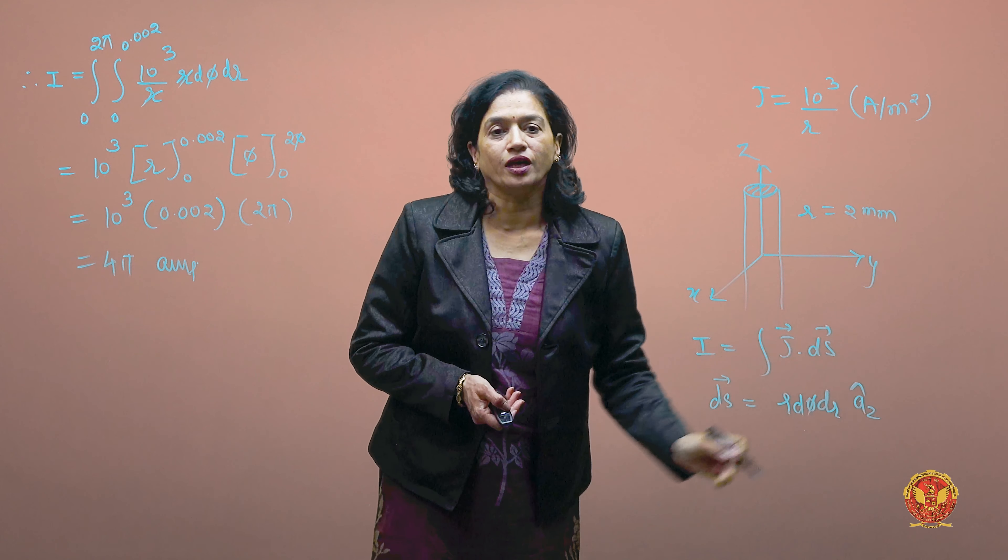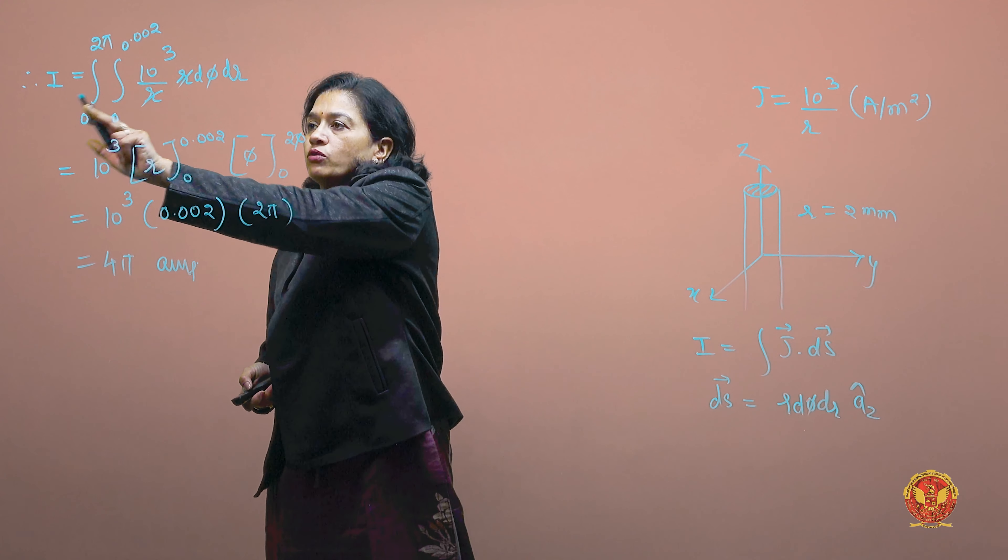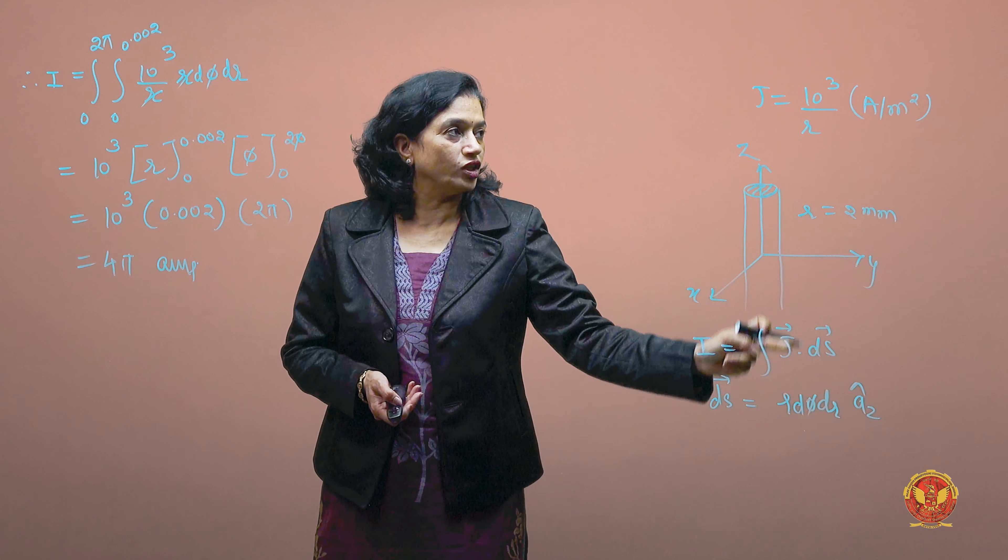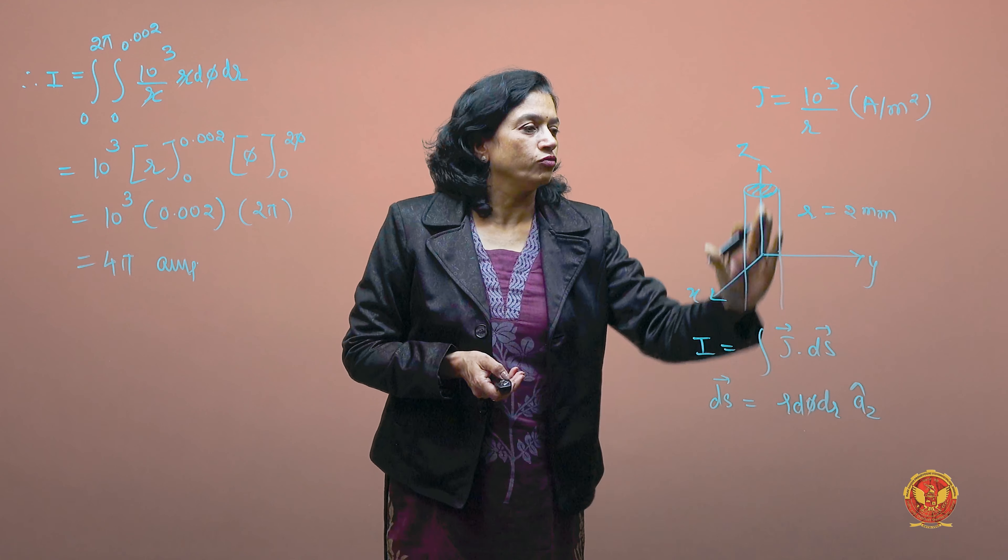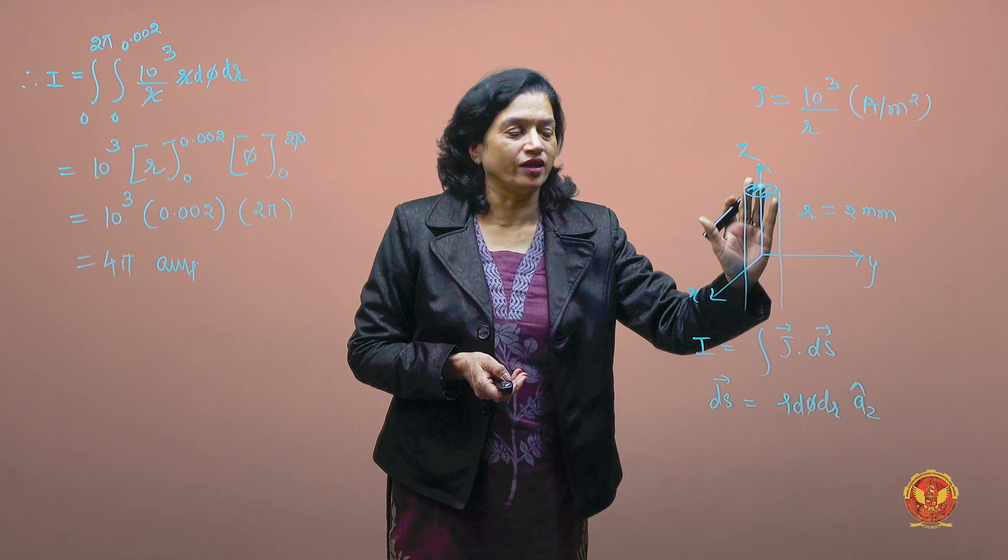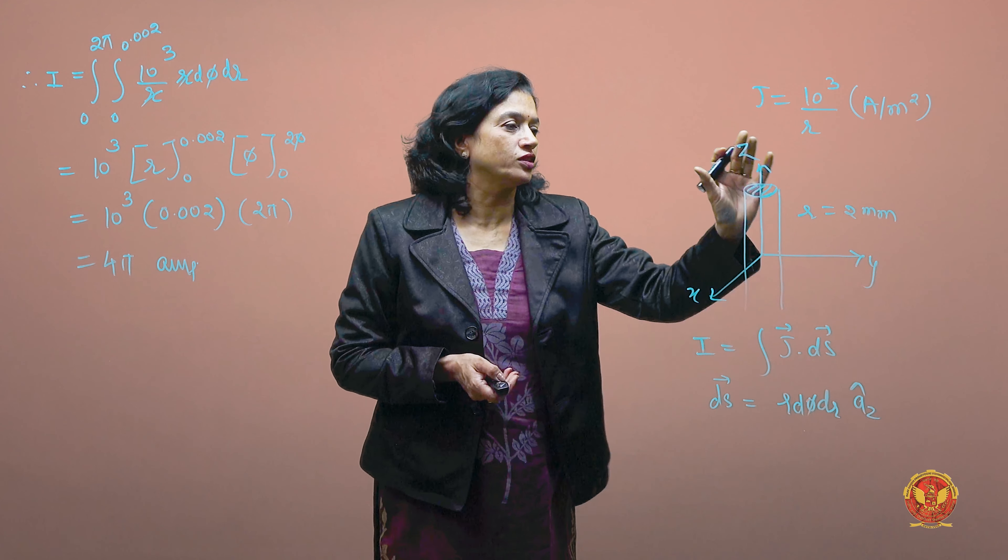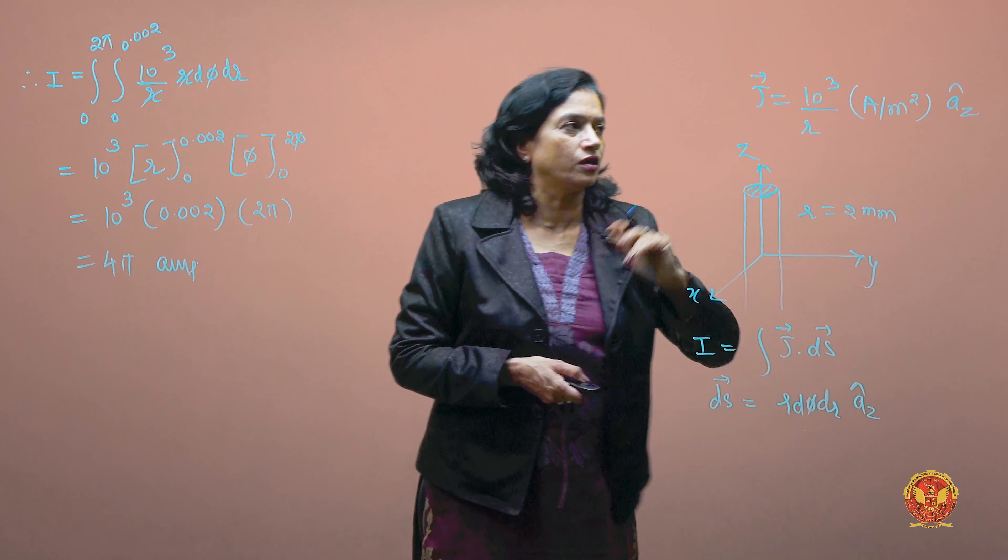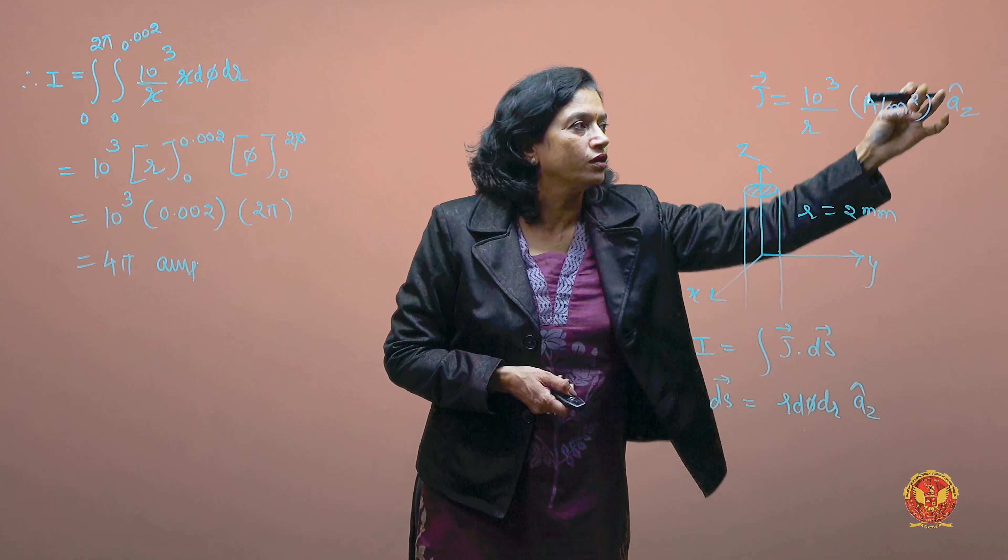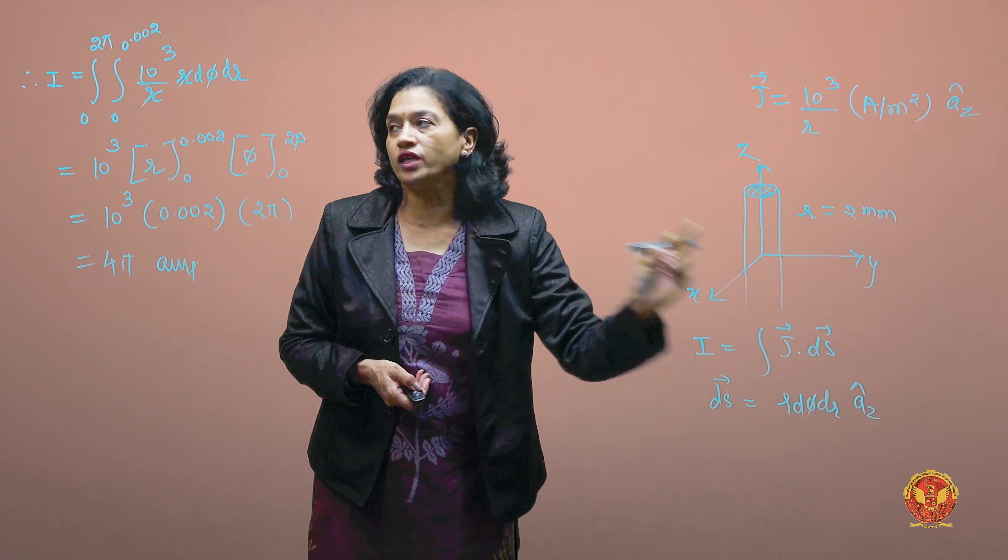Now to find J, we substitute 10³/r. J's direction is flowing in the z direction. When we compute J·ds, since both ds and J are in the z direction, they are parallel, so it will be just the magnitude.